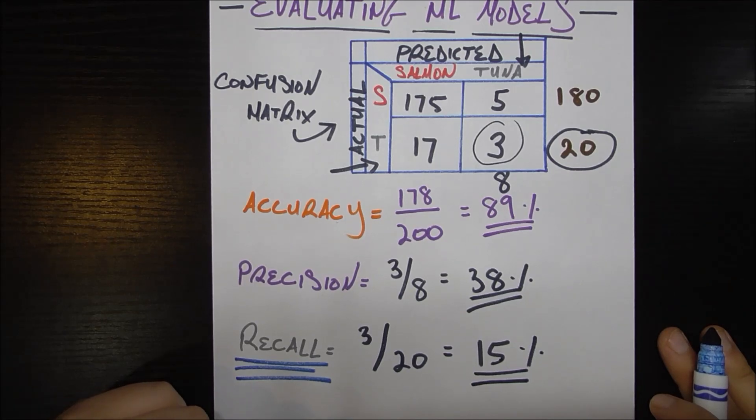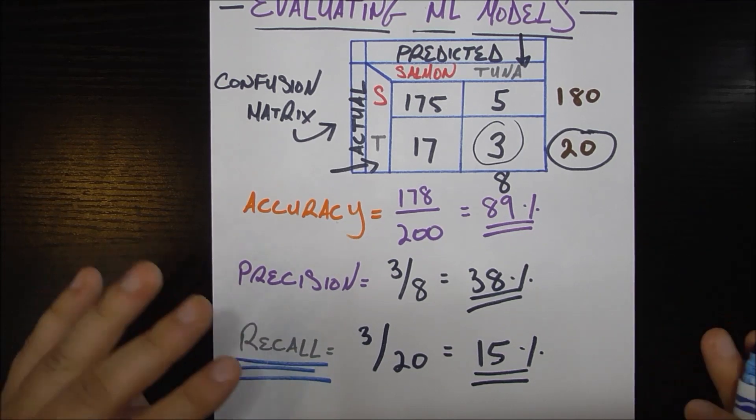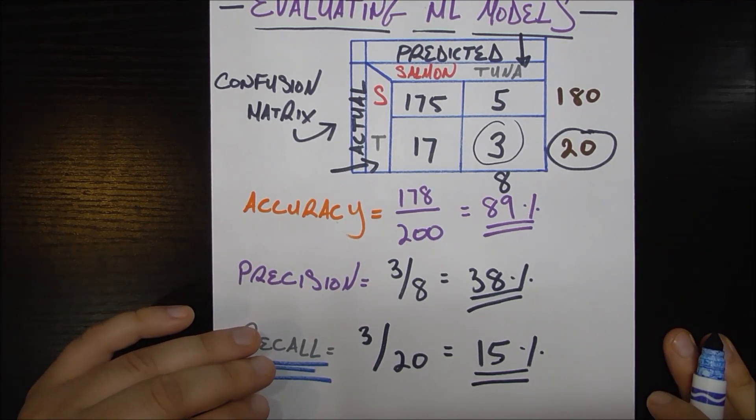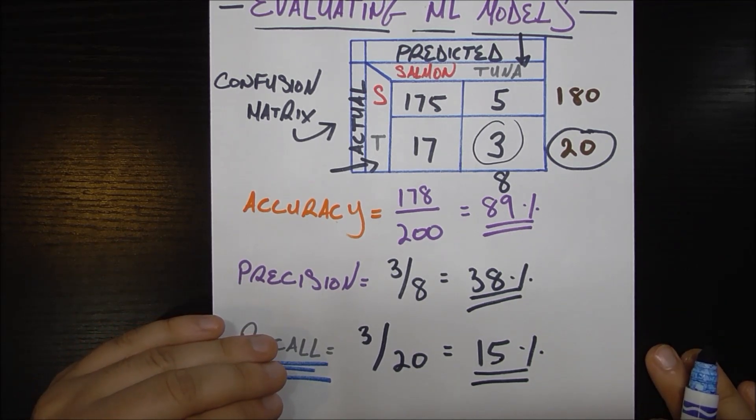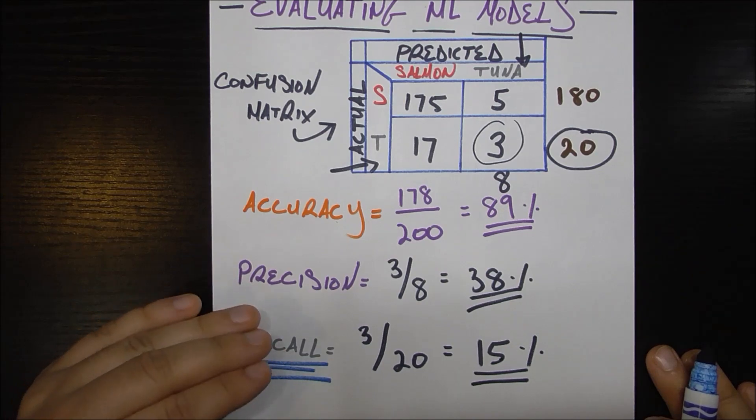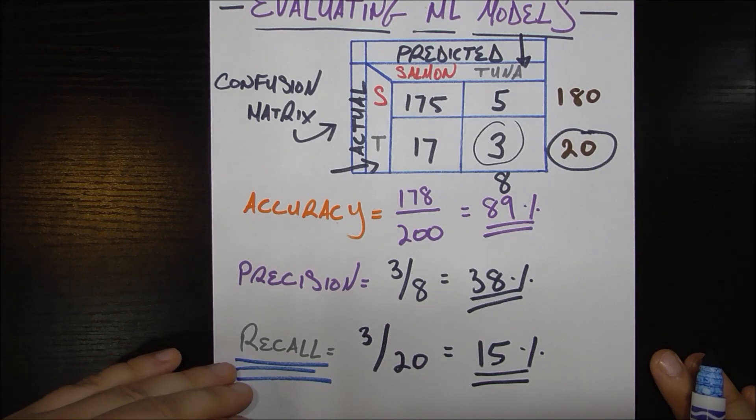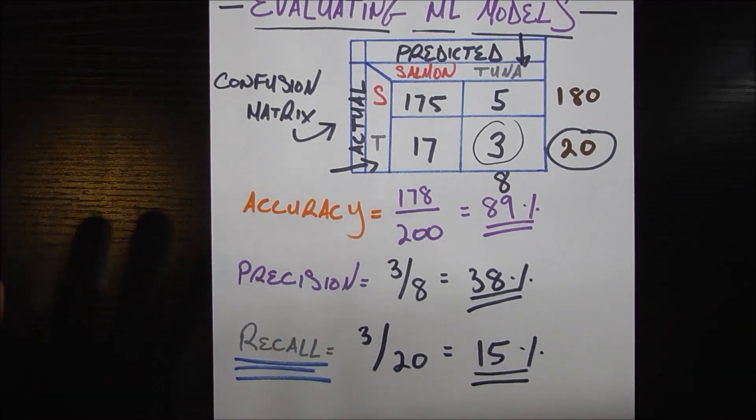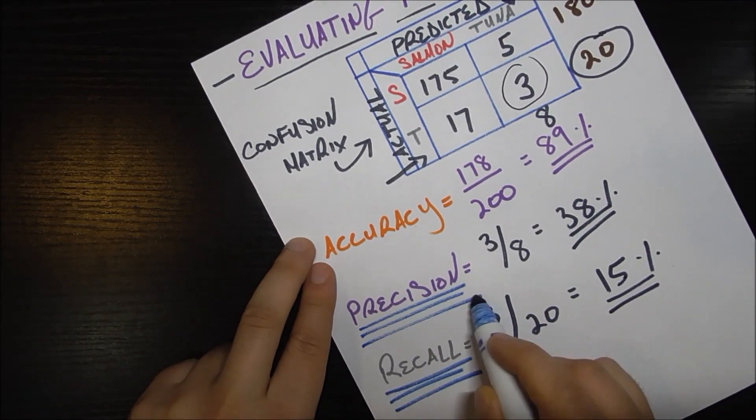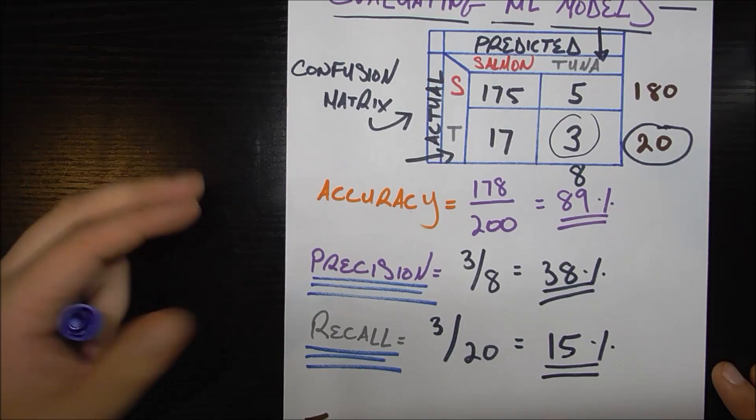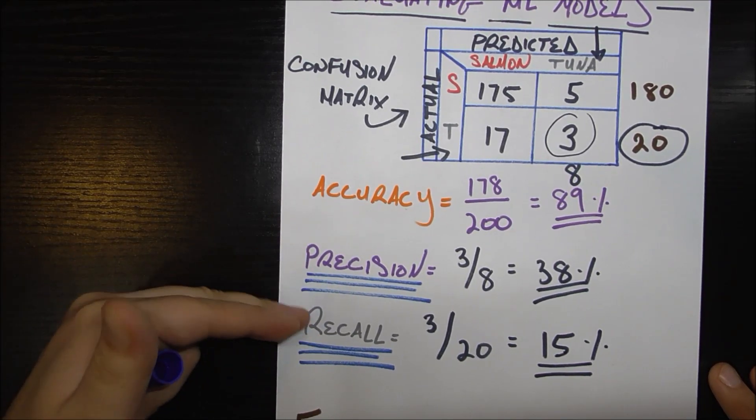Now a case where precision might be more important is if I'm trying to select students at my school to represent the whole school in some national competition. I want to make sure that whatever method I'm using to pick students who are very qualified to represent the school, I'm picking only qualified students. It's okay if my recall is not that high, which means that I'm not picking all qualified students. I just care that of all the students I pick, a big percentage of them, a big precision, are qualified to represent the school. Those are just two cases where precision might be more important or recall might be more important.